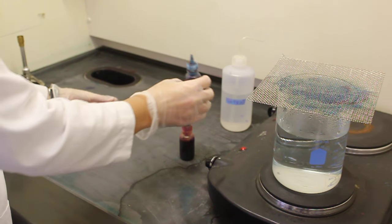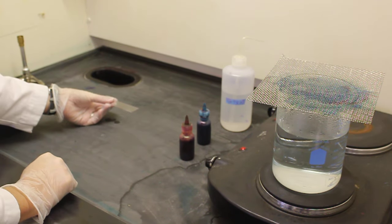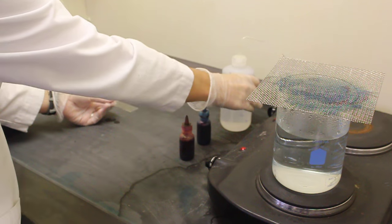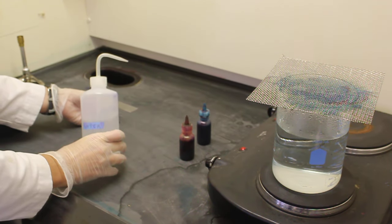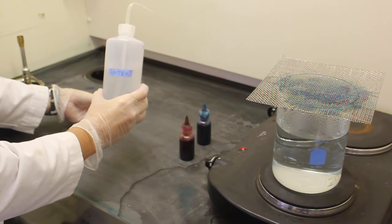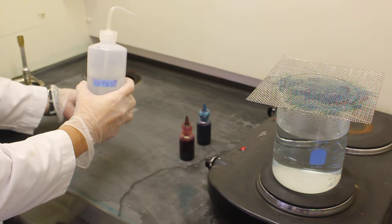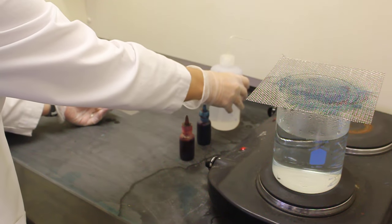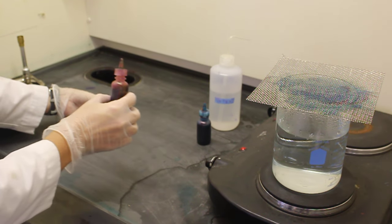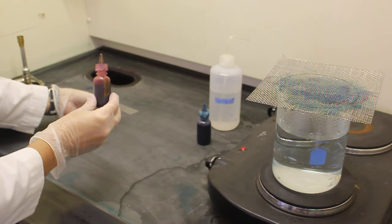The second step of the endospore stain is a decolorization step. In this procedure, we will use water as our decolorizer instead of ethanol. Ethanol is too harsh to use for the endospore stain. Our third and final stain is the counter stain safranin.